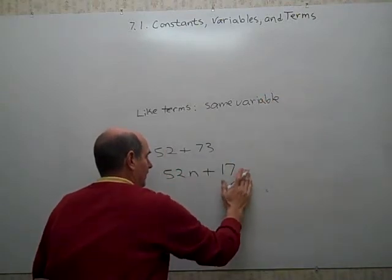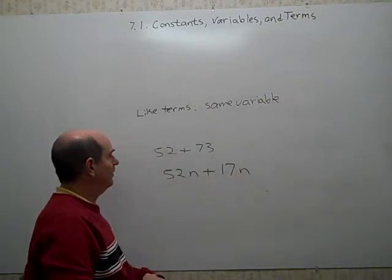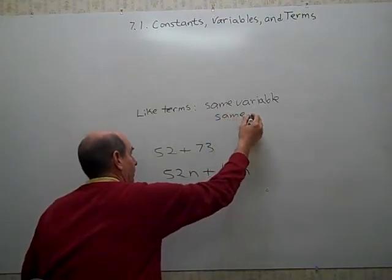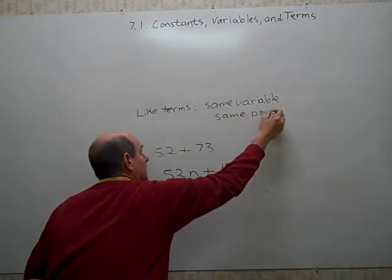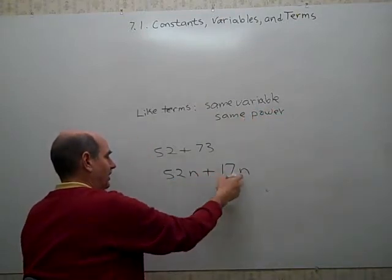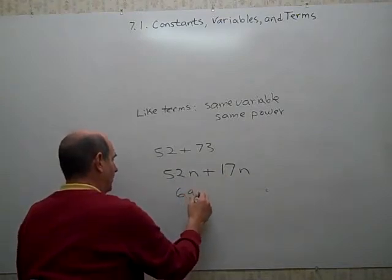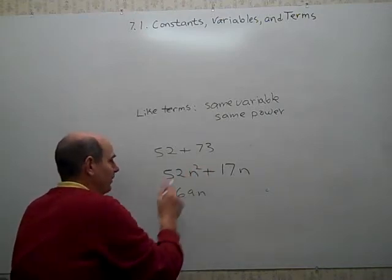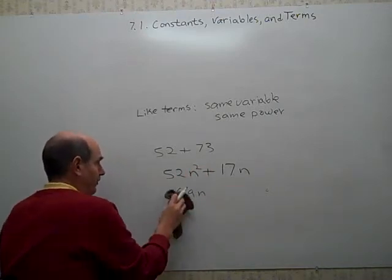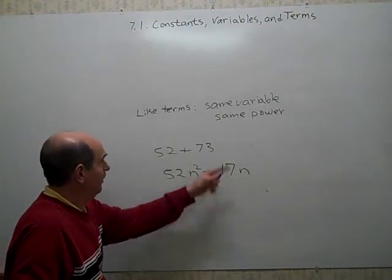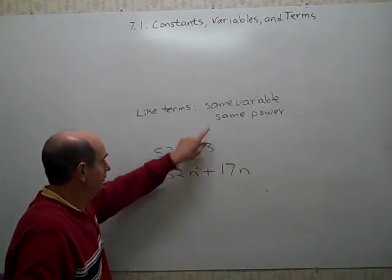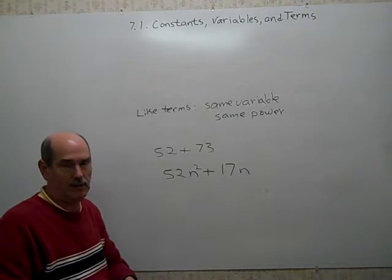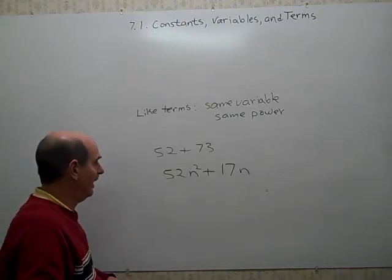So if we made this an n, we're good so far. We can add 52n and 17n, but it also has to be the same power. The variable has to be the same power, which we are. So we have 52 n's here and 17 n's here, for a total of 69 n's. So we can do this addition problem. If this was the n to the second power, then we don't have n to the second power. It doesn't fit our definition of like terms. If we have the same variable, that's good. But we don't have the same power, second power, first power. So these terms are not like each other because they're not to the same power. And we would be done. We can't add them.